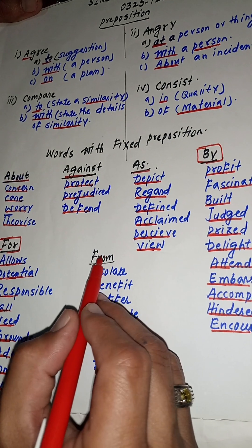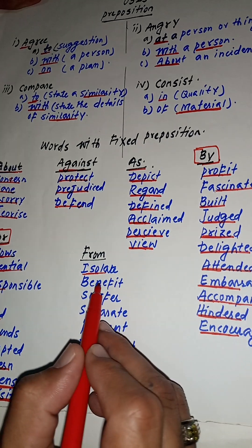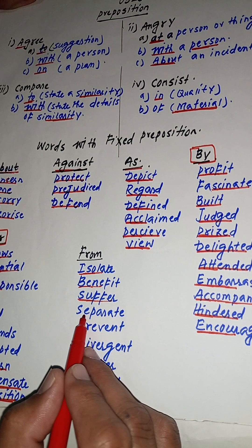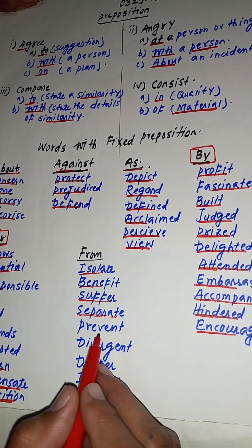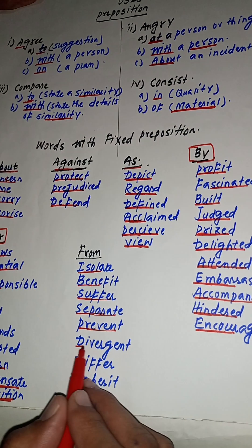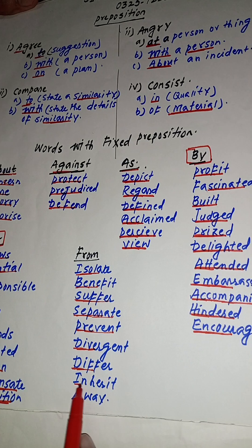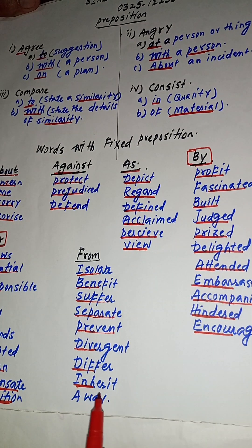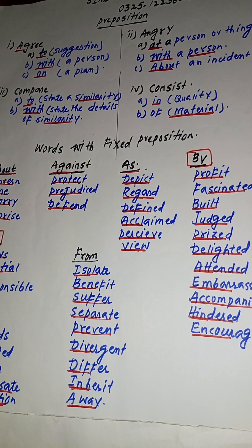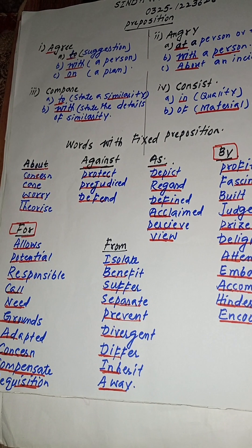Our preposition is FROM. Verbs that take 'from': isolate from, benefit from, suffer from, separate from, prevent from, divergent from, differ from, inherit from, and away from. Kindly subscribe to my YouTube channel for more information and lectures.